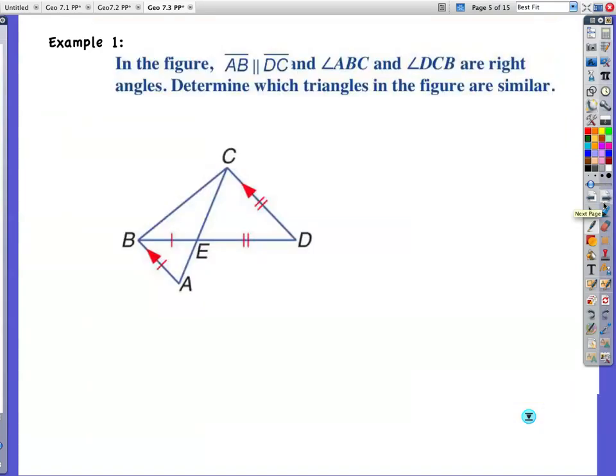Example one. In the figure, AB is parallel to DC. So you can see those parallel markings. I'm just going to highlight those to show that there is a parallel and parallel. And angle ABC and angle DCB are right angles. So I'm going to mark that in.